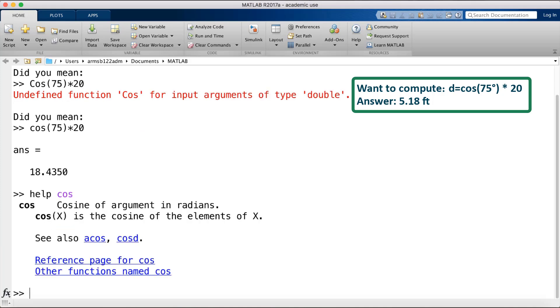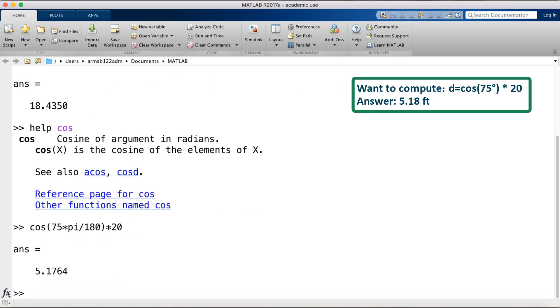So I'll type that out. Oh, it looks like cos requires an argument, an input, in radians. So let's try converting from degrees to radians. Cos 75 times pi over 180, we'll close the parenthesis and multiply that by 20. I'll push enter and that gives me an expected value.